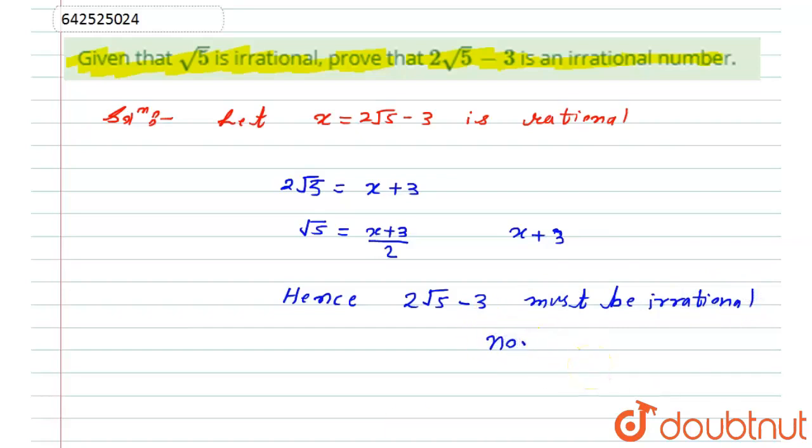it is proved that the given number, that is 2√5 - 3, is nothing but an irrational number. I hope you will like the solution. Thank you.